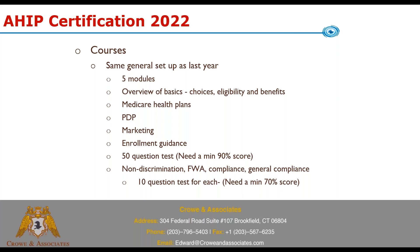Once you pass your 50-question test, you still have to do the other trainings: non-discrimination, fraud, waste and abuse, compliance, and general compliance. You only need a 70% score on those, and those tests are only 10 questions each. Just make sure you complete those.